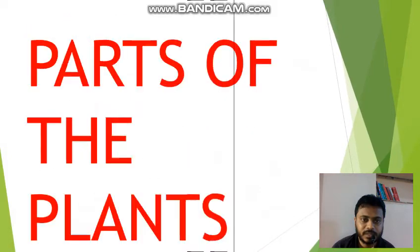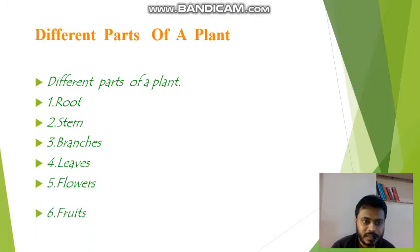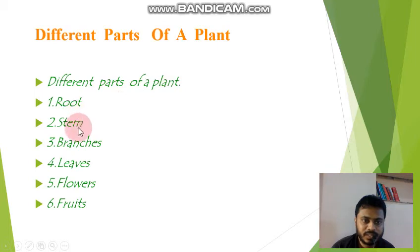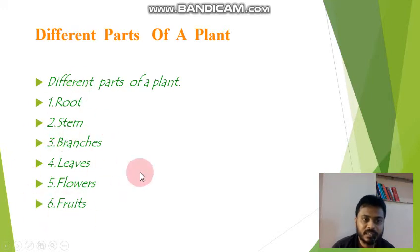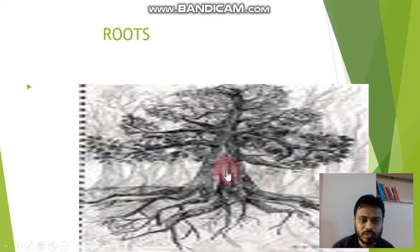Parts of the plants. These are the parts of the plant — different parts of a plant: root, stem, branches, leaves, flowers, and fruits. We'll see their function one by one. First one, root.